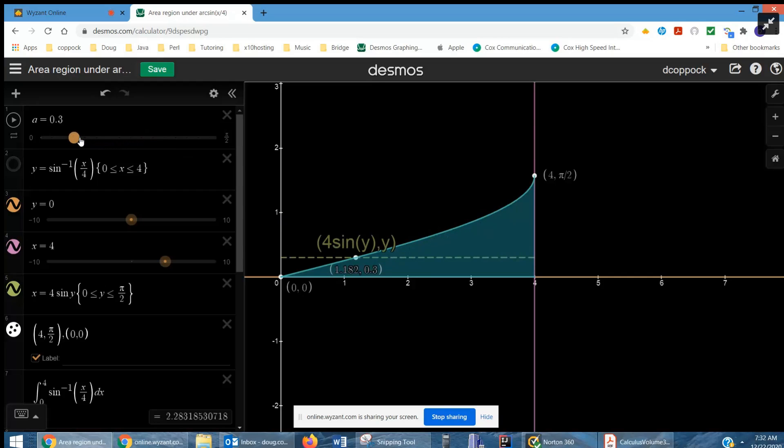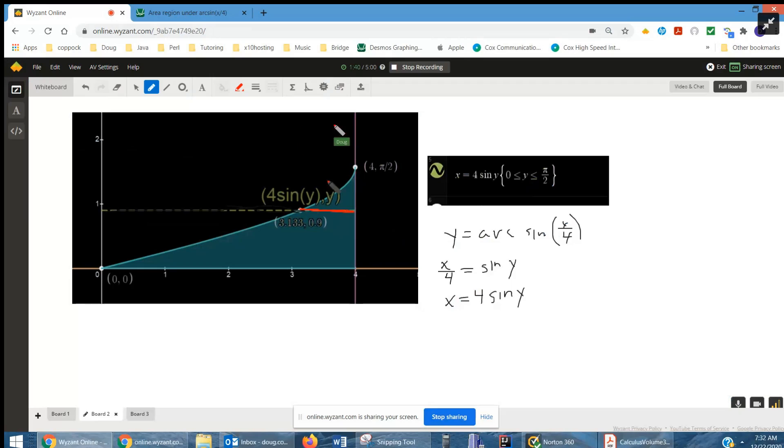The length of that typical rectangle changes. It's always this distance from here to here is always 4.